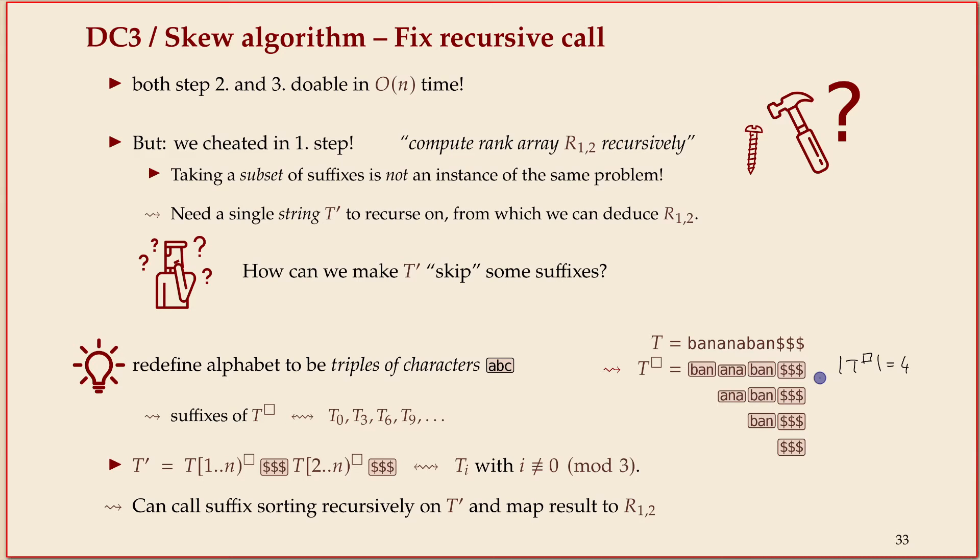Now the main trick is: if you take the suffixes of T box, these are exactly the suffixes that start at zero, three, six, nine, and so on - all the suffixes that start at multiples of three. That's kind of the opposite of what we wanted. We wanted to have all those that don't start at a multiple of three, but you can get that by just shifting things a bit around.